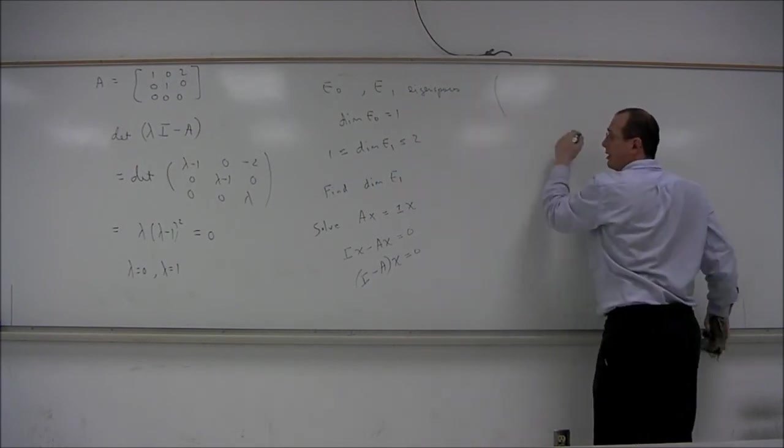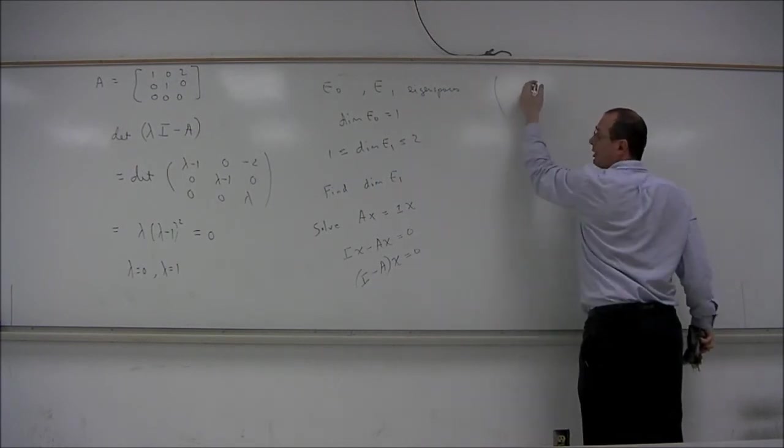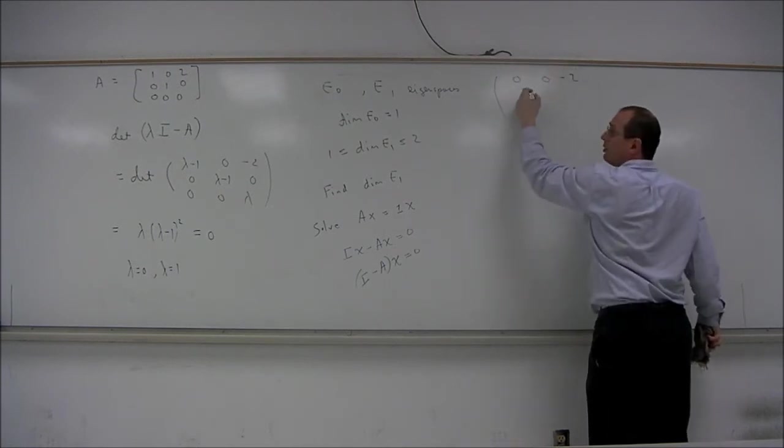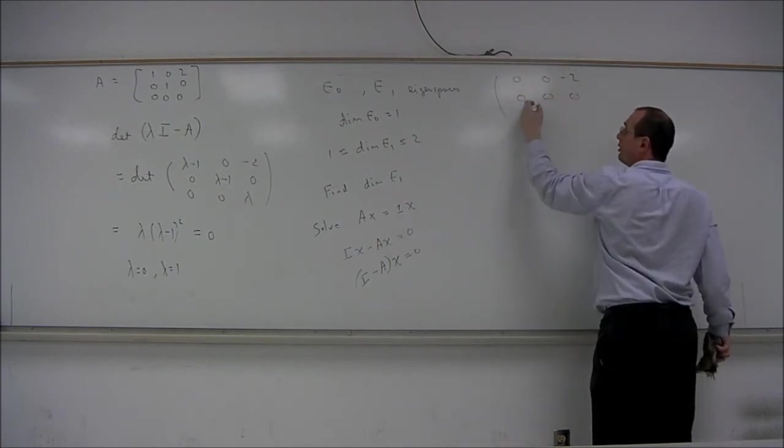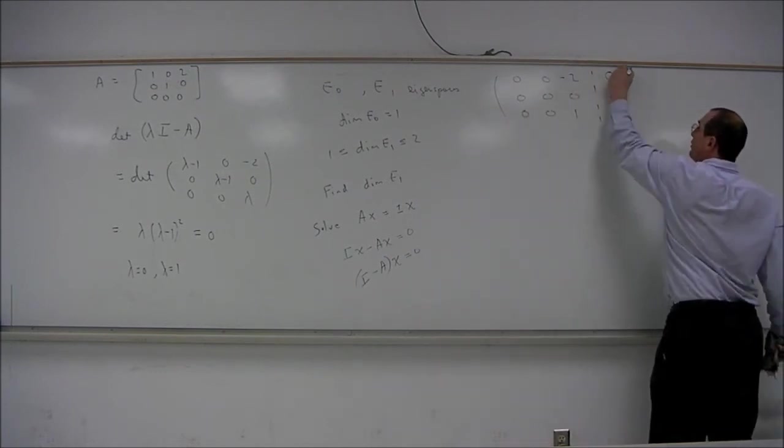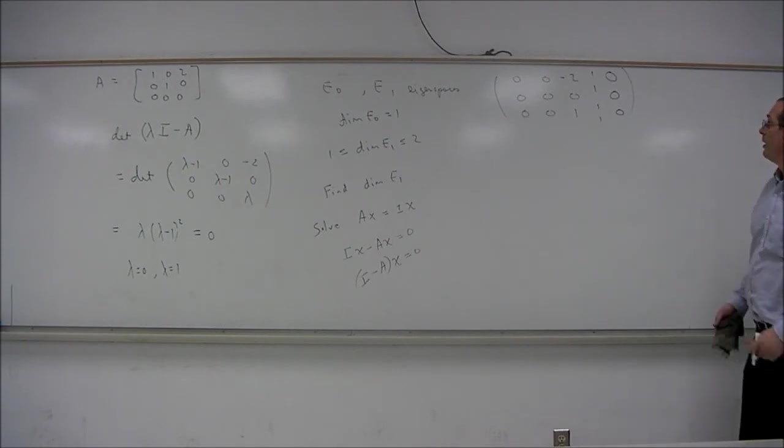So let's do that. So we have the augmented homogeneous system looking like 0, 0, negative 2, 0, 0, 0, 0, 0, 1. And then on the right side, the augmented system, the 0 vector.